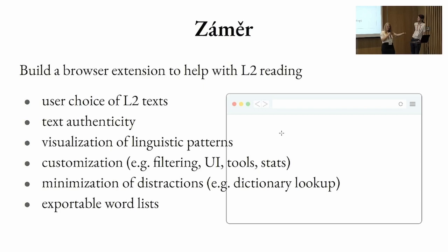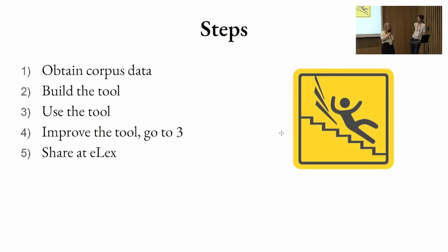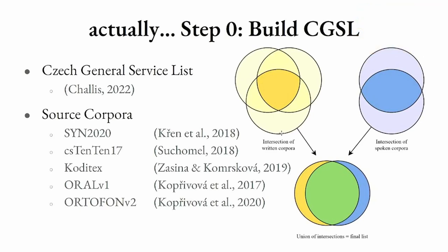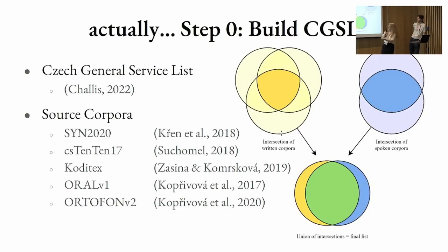So I enlisted my friend, this native Czech speaker, to help me implement this, and we'll talk about it now. The steps go all the way up to number five. Actually, there's a step zero, which is to build the core vocabulary list of Czech — the Czech General Service List. This was my master's thesis project, and many of the researchers here who provided these wonderful Czech corpora are actually here today, which is just so cool to me. Basically, we built a word list — it's 10,000 words long, and it represents the core vocabulary across written and spoken versions of Czech.